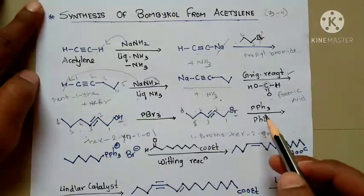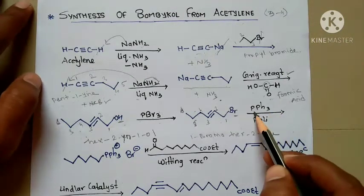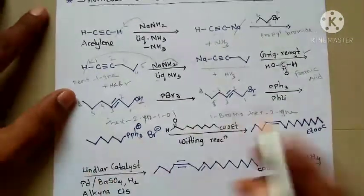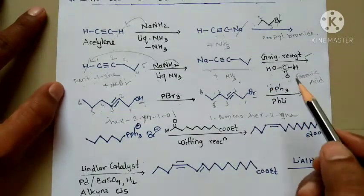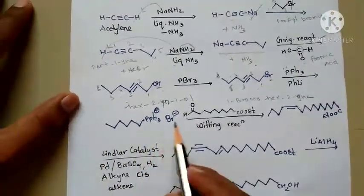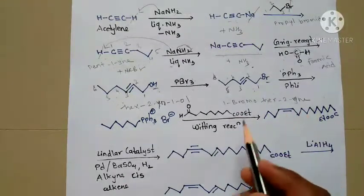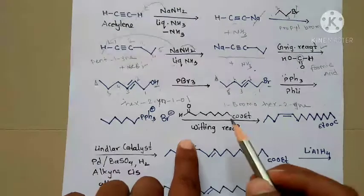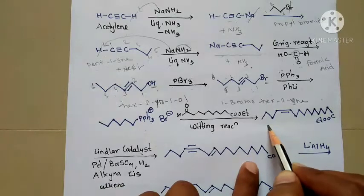This intermediate reacts with triphenylphosphine, and you get triphenylphosphine bromide. Then this phosphonium salt undergoes a Wittig reaction with another molecule and you get such an intermediate.